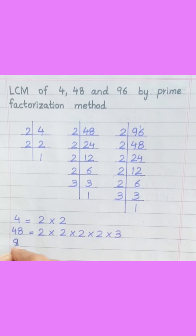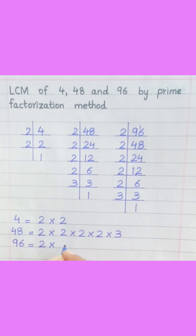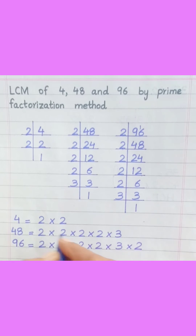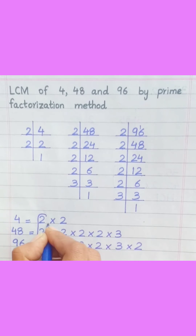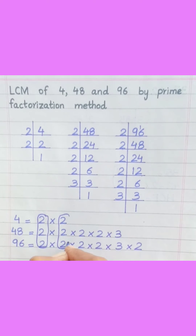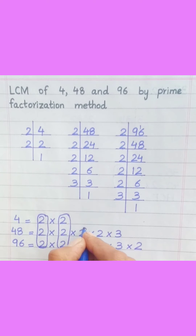96 equals 2 multiply 2 multiply 2 multiply 2 multiply 2 multiply 2 multiply 2. Loop the factors that are common to all of the given numbers.